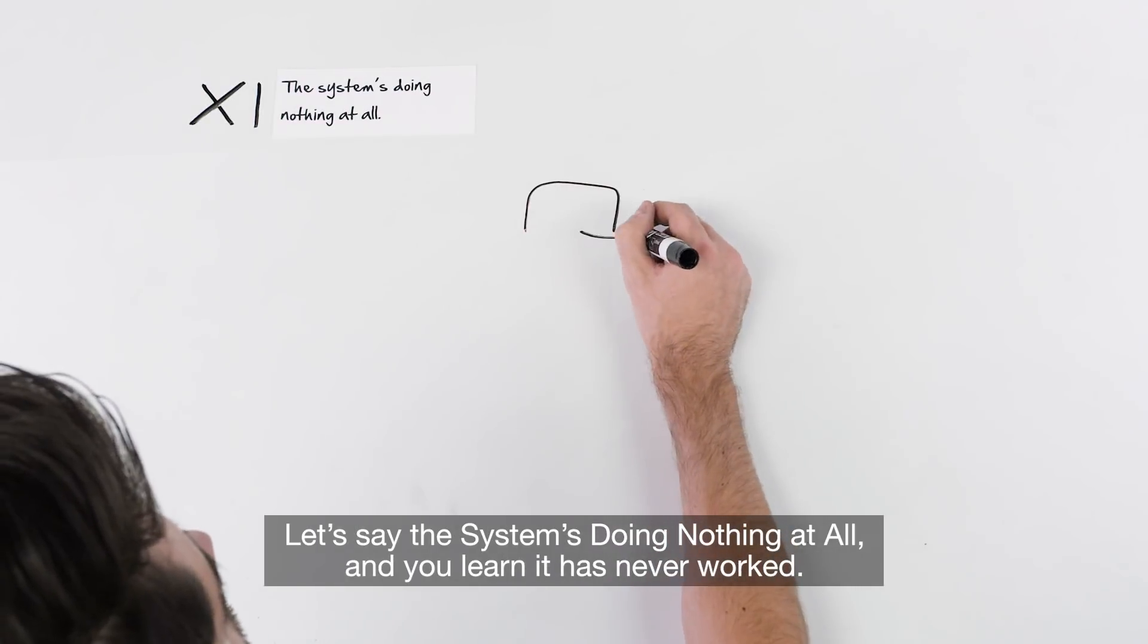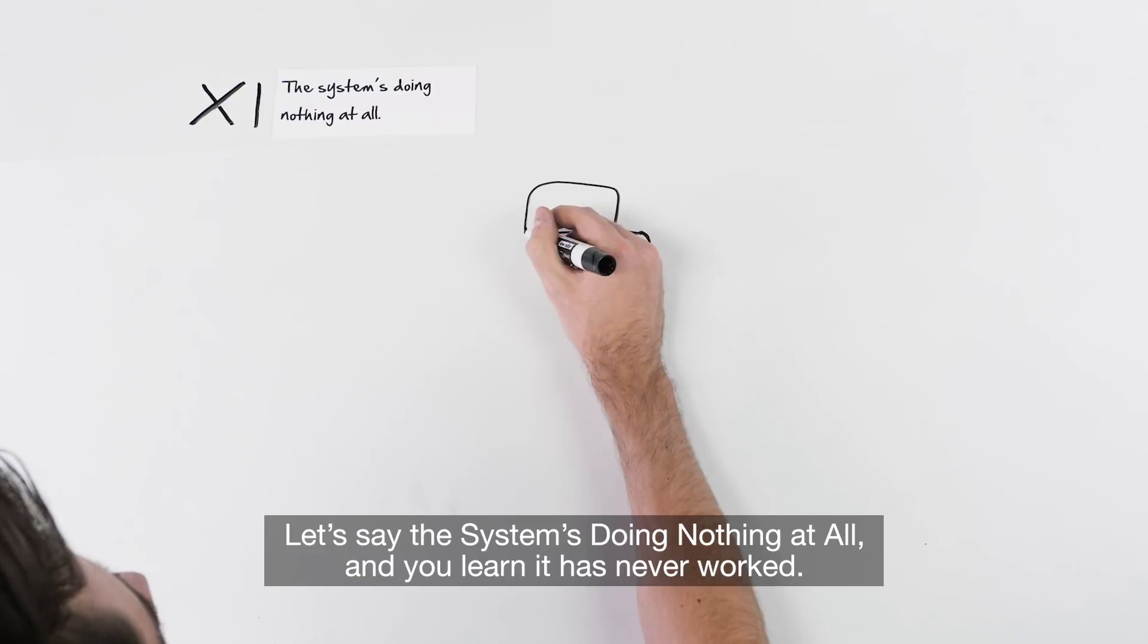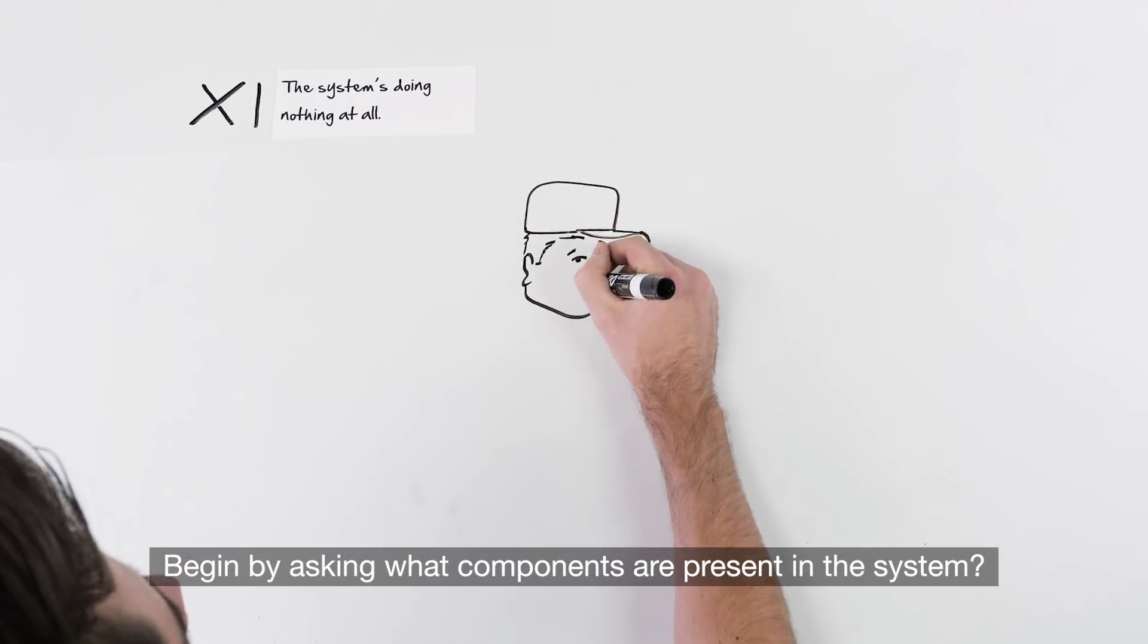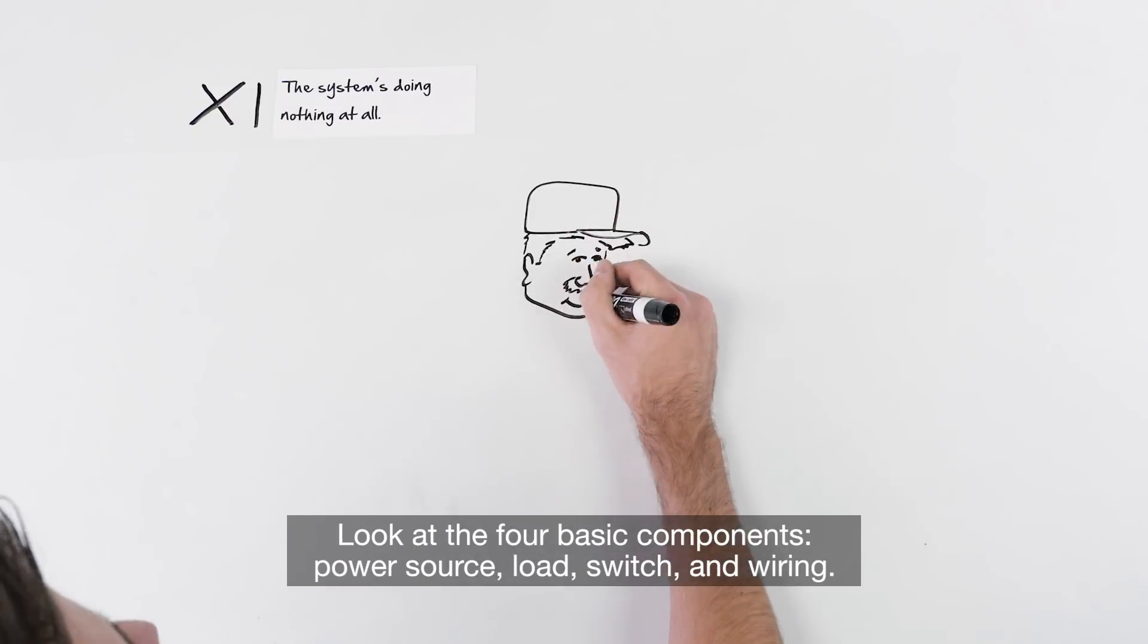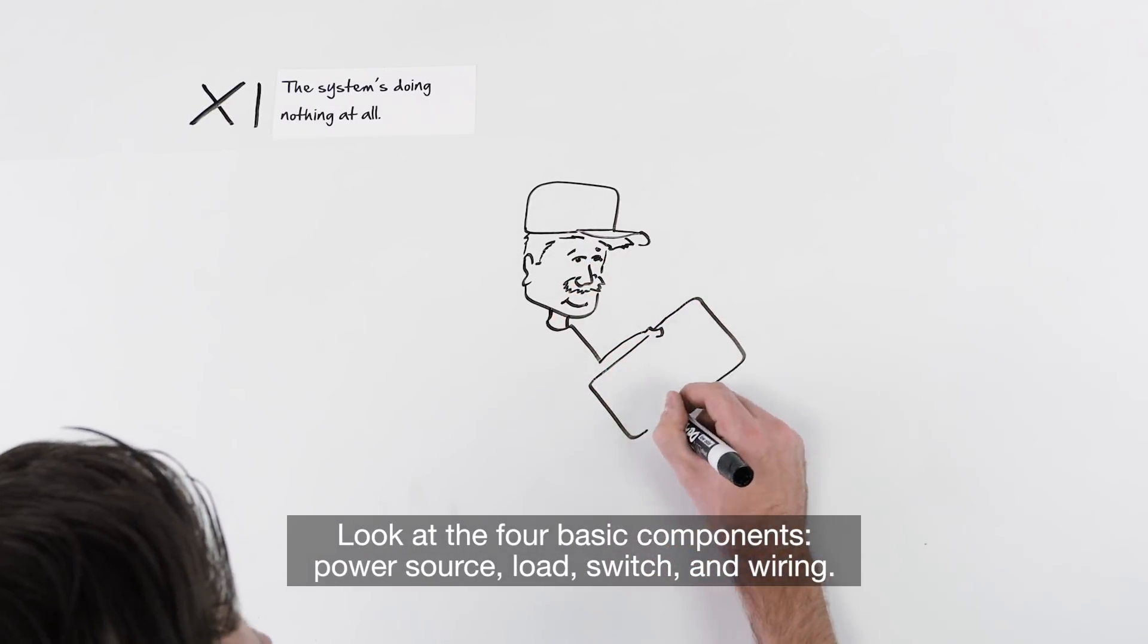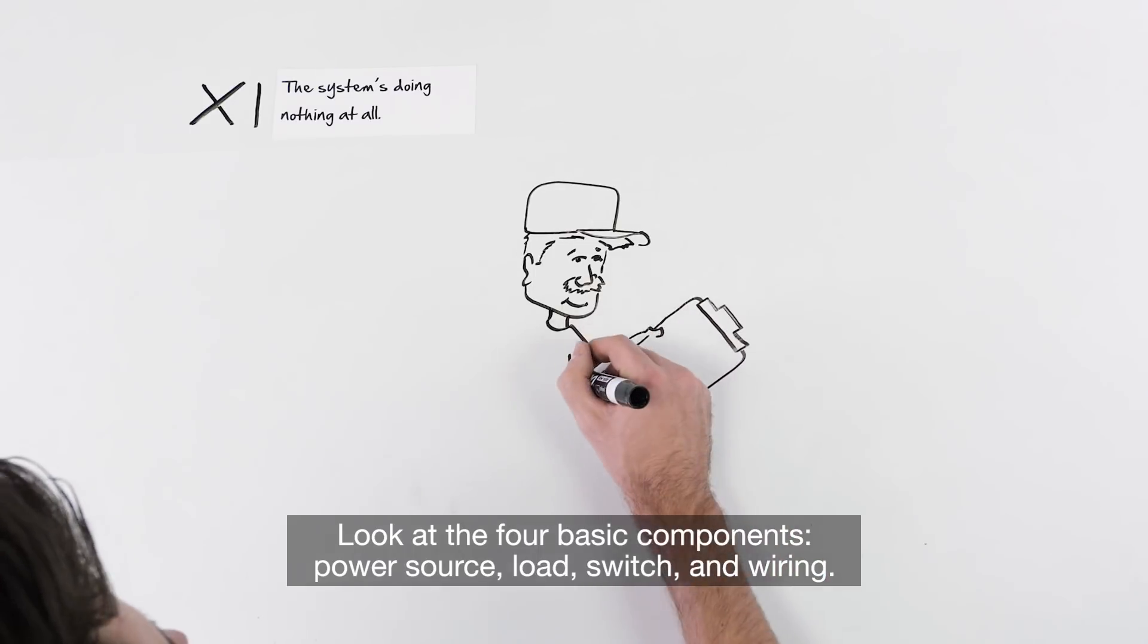Let's say the system is doing nothing at all, and you learn it has never worked. Begin by asking what components are present in the system. Look at the four basic components: power source, load, switch, and wiring.